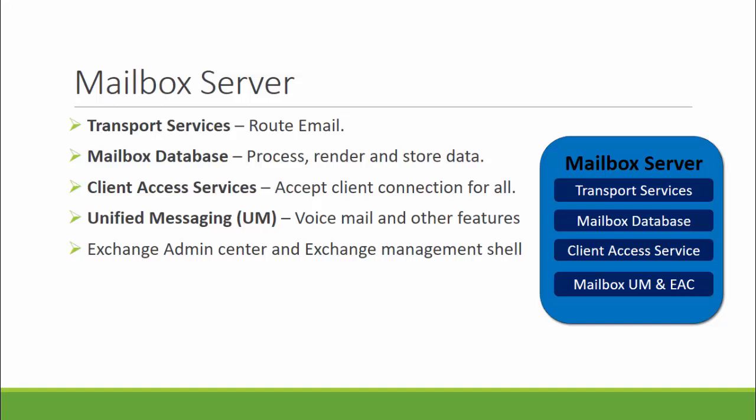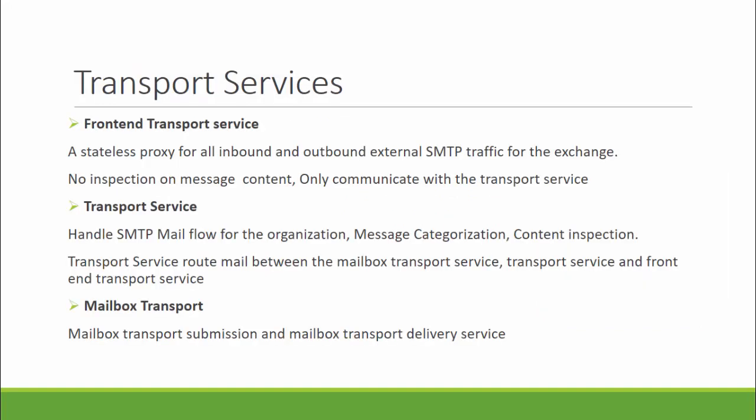Let us take transport services. In previous versions, transport components were spread out across mailbox and CAS server roles. In Exchange 2016, we have only one role, so all transport components come in one server. The first transport service is the frontend transport service. This service ran on the client access service in previous versions. It acts as a stateless proxy for all inbound and outbound external SMTP connections — it does not inspect any message content and does not queue any message locally. It only communicates with the transport service on a mailbox server.